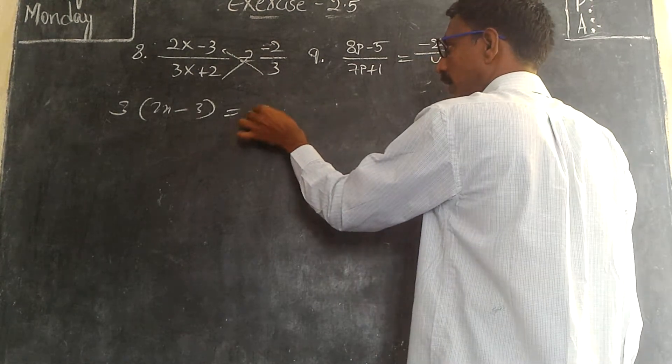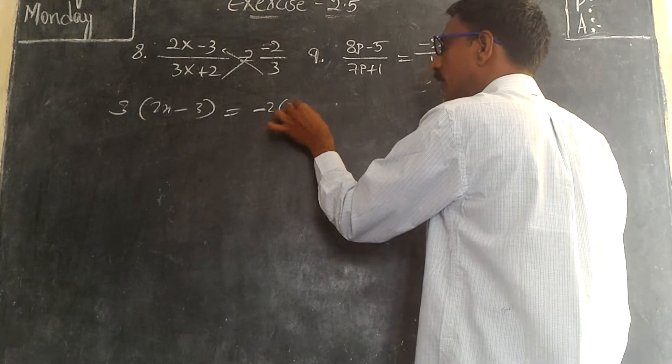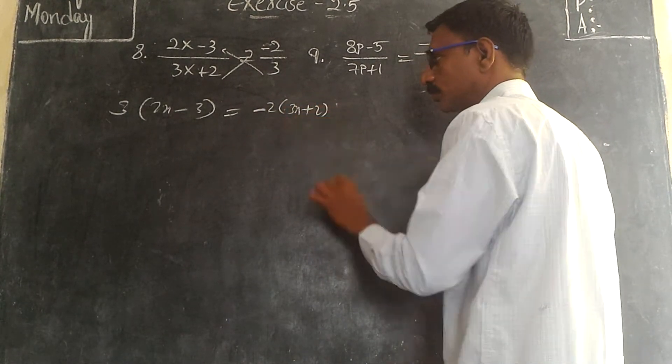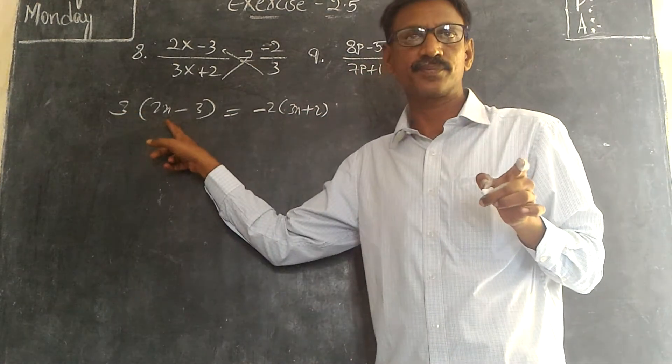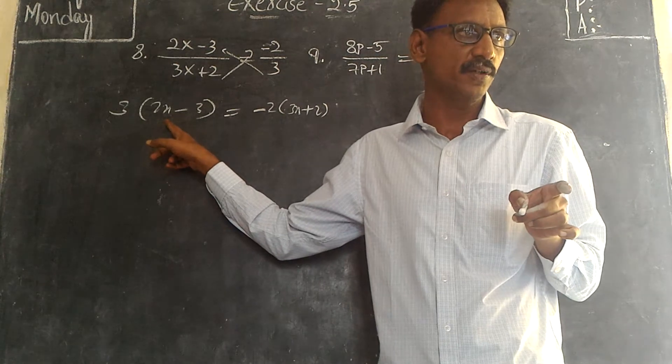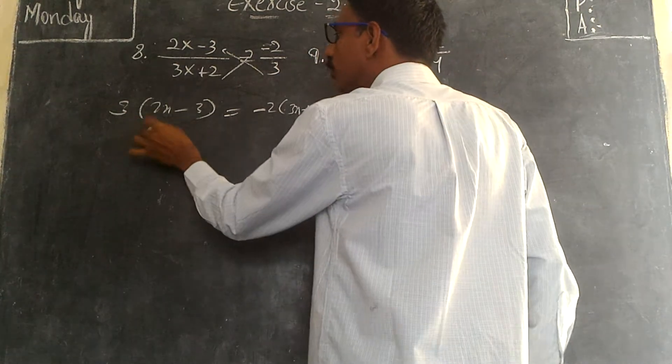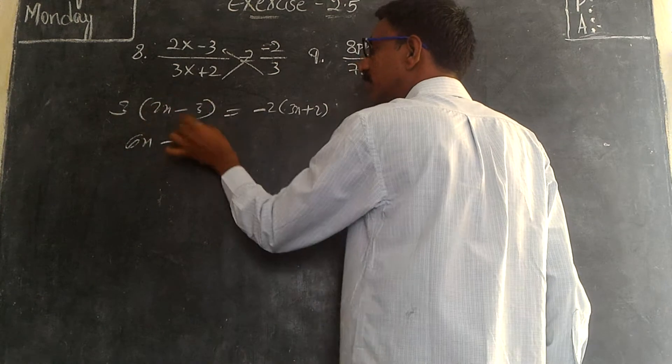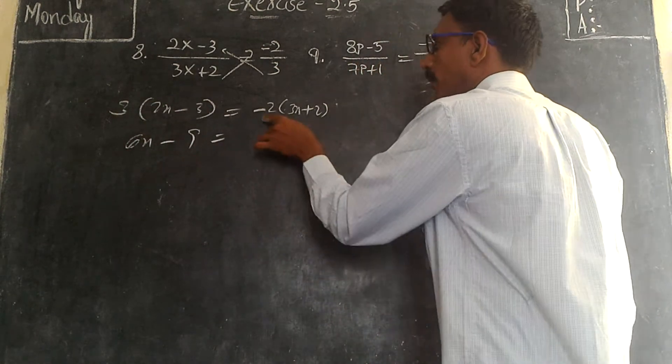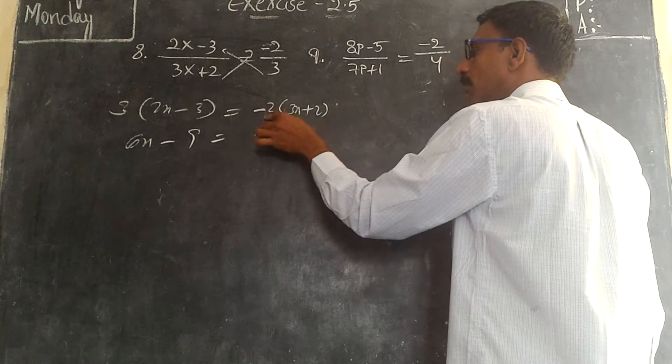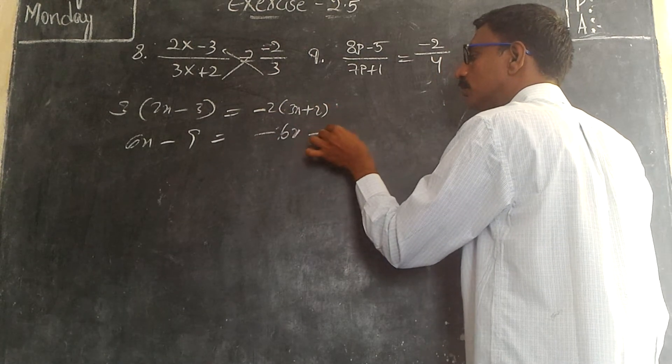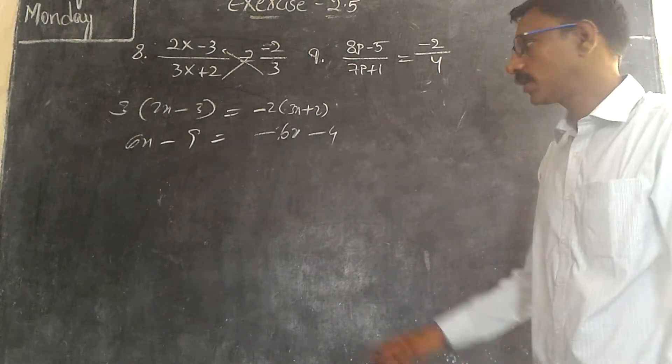Hereafter everybody knows, distributing. You are using distribute. 2 times 3 is 6x, 3 times 3 is 9. Minus 2 into 3x is minus 6x, minus 2 into 2 is minus 4. Minus into plus is minus.